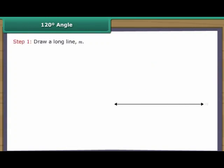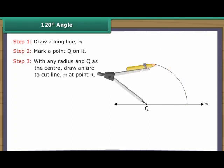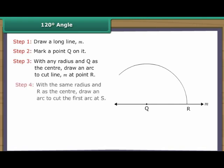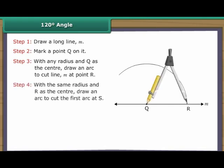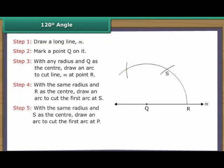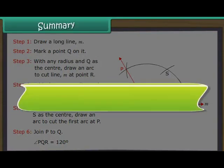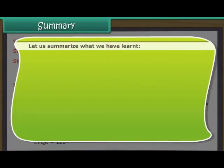Construction of 120 degree angle. Draw a long line M. Mark a point Q on it. With any radius and Q as the centre, draw an arc to cut line M at point R. With the same radius and R as the centre, draw an arc to cut the first arc at S. With the same radius and S as the centre, continue the construction. Let us summarize what we have learnt.